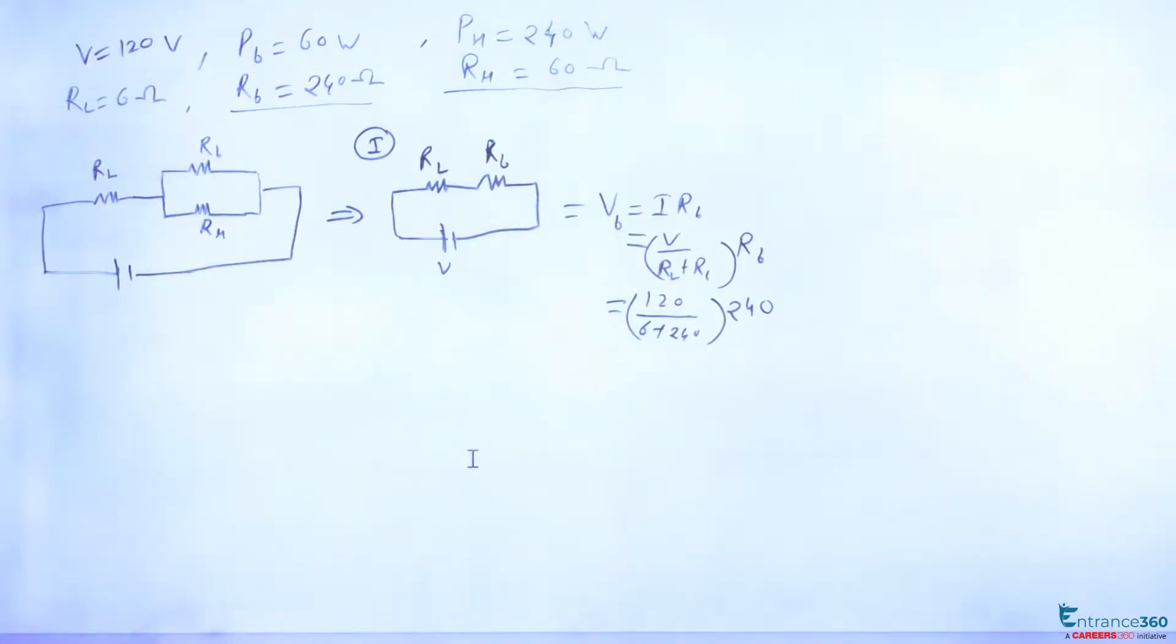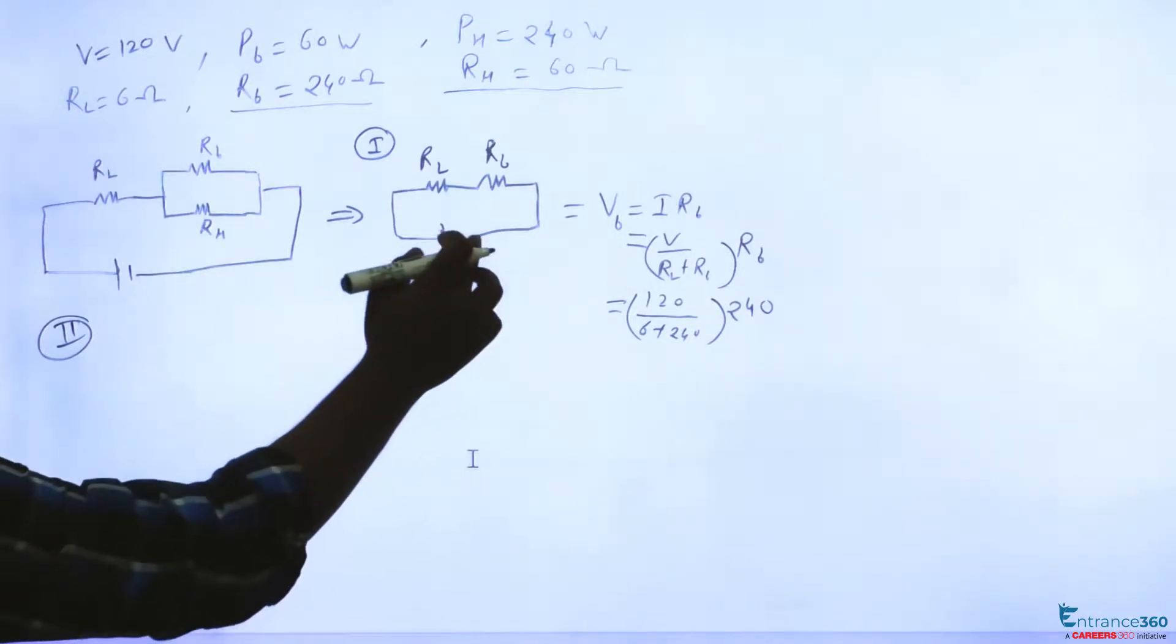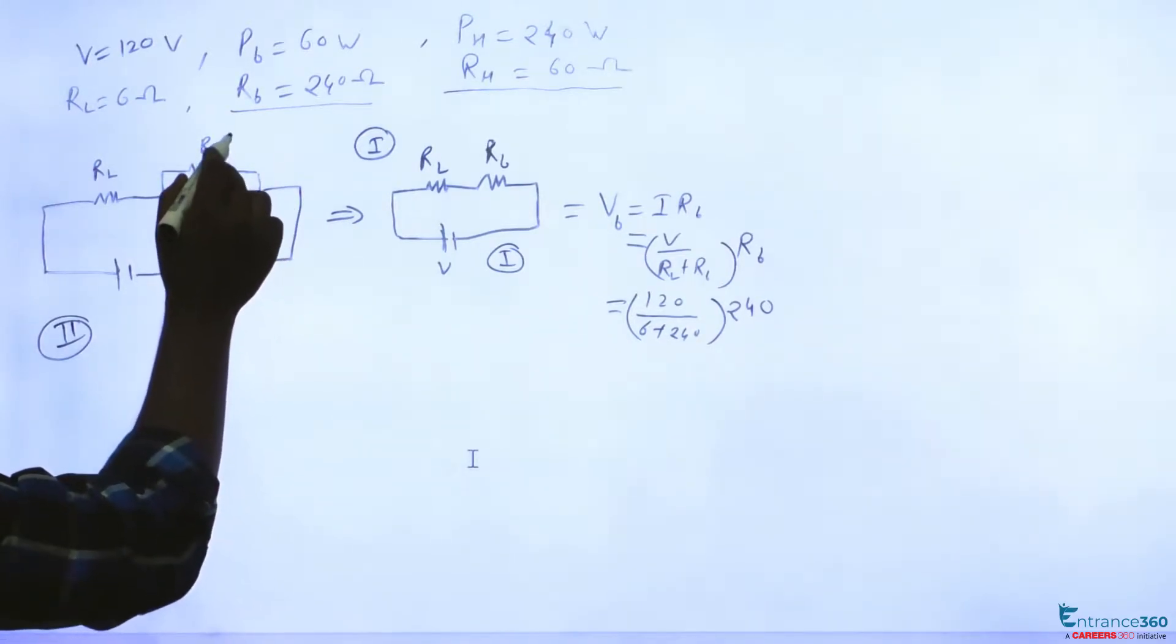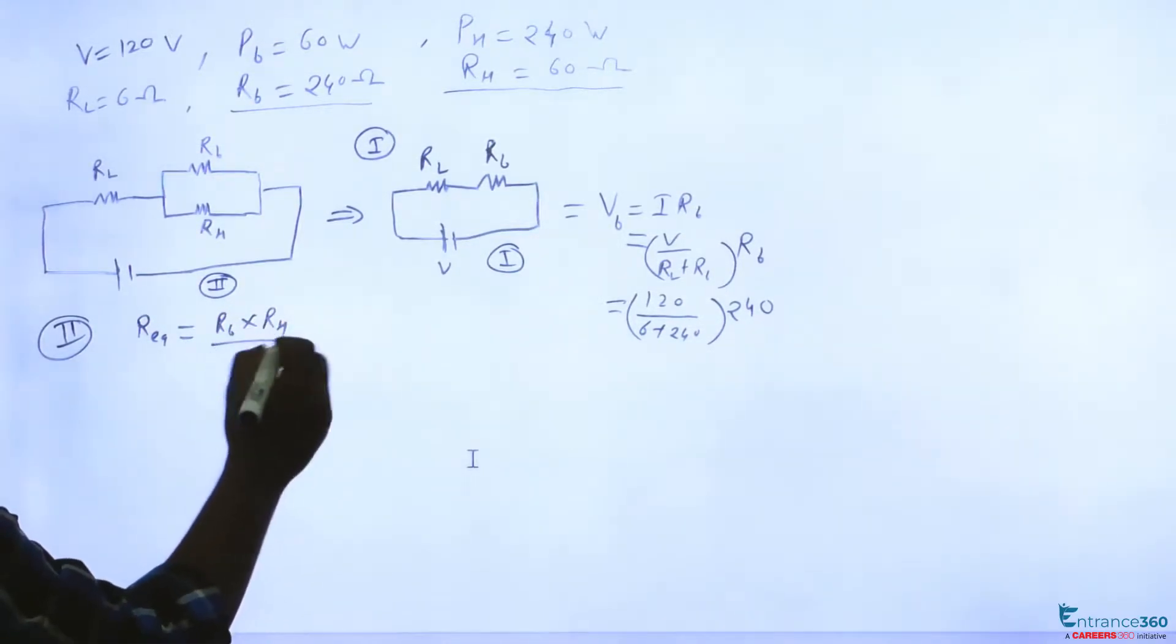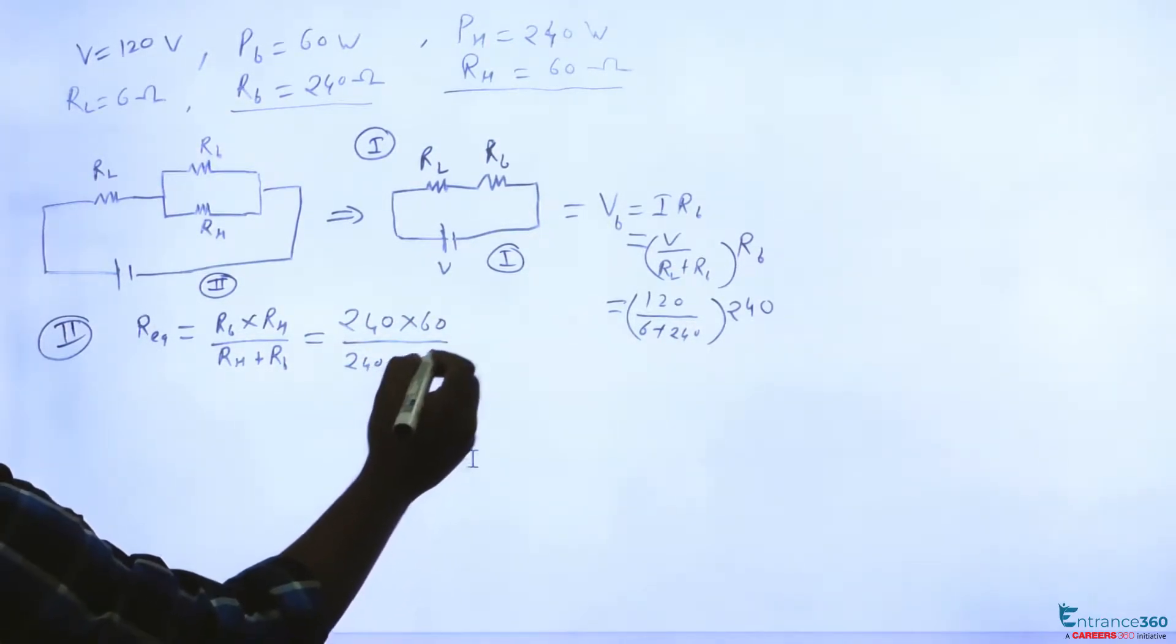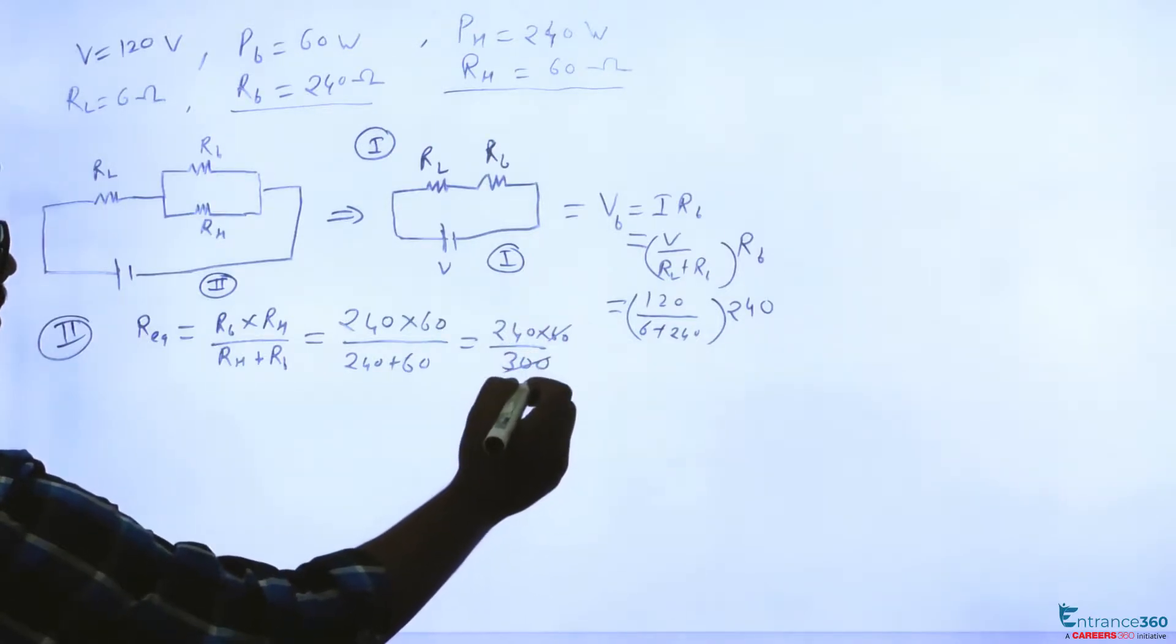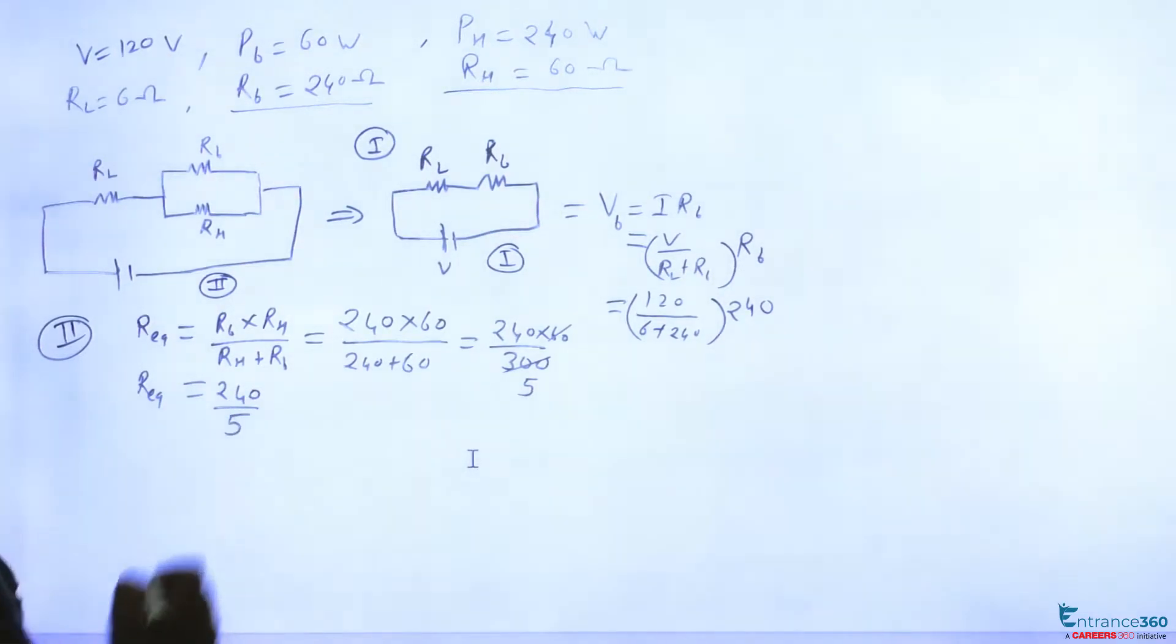And in the second situation, we have heater switched on, so the figure will be this. So this is figure for first situation and this is figure for second situation. So the R effective due to this parallel combination can be written as R equivalent equals RB into RH upon RH plus RB, which can be given as 240 into 60 upon 240 plus 60, which is 240 into 60 upon 300. Let's divide this by 60, so R equivalent will give 240 by 5.